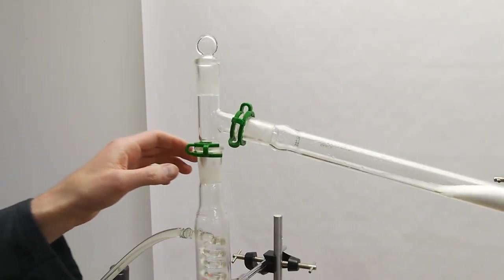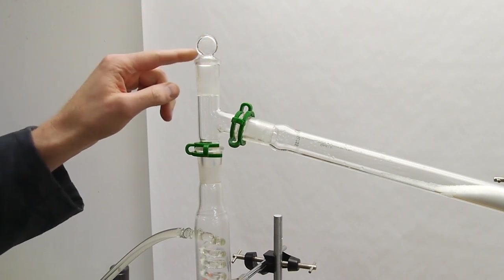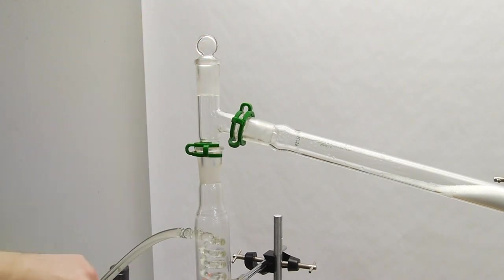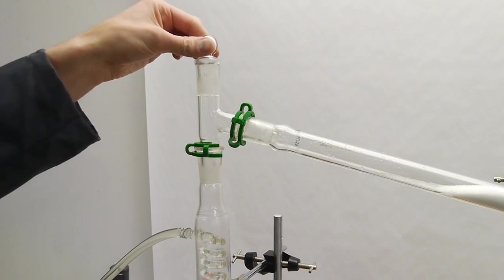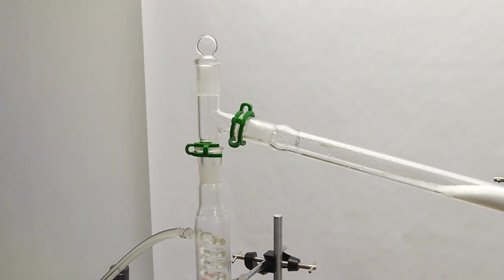I've used these Keck clamps to hold together the apparatus, but there's a plug at the top here that purposefully doesn't have a clamp. This is so that if the pressure increases high enough it will just push this cork upward and vent the ammonia out instead of exploding the glassware and spraying ammonia everywhere—which reminds me, you'd have to be totally nuts not to do this in a fume hood.